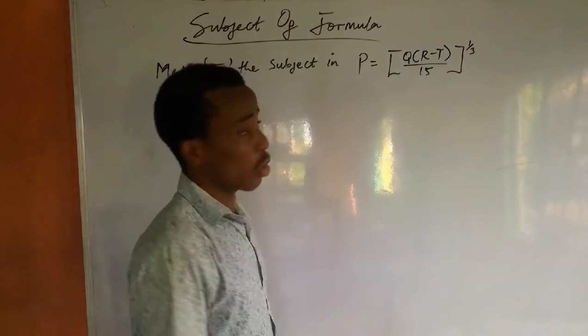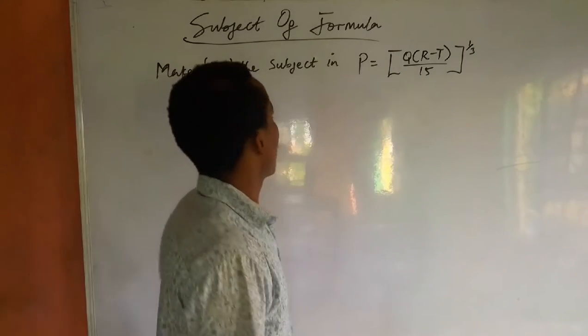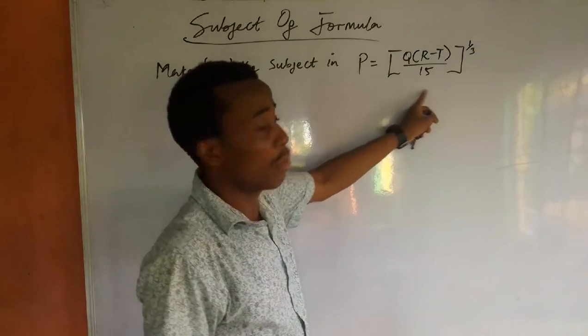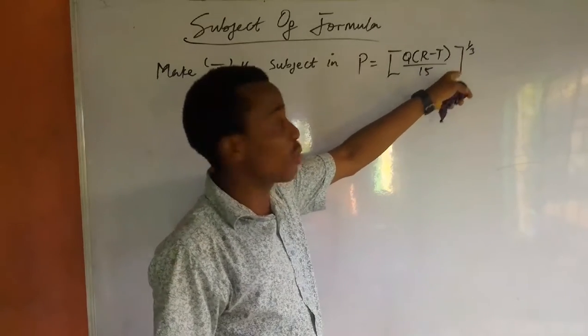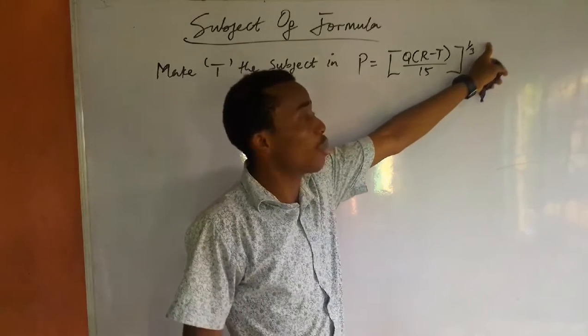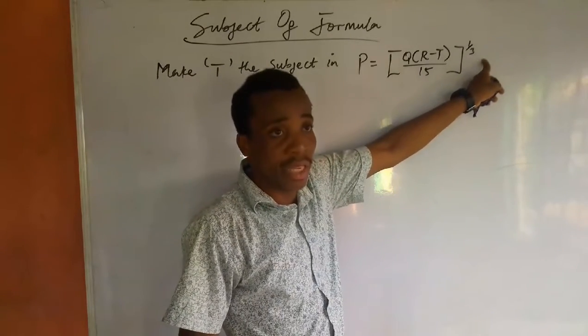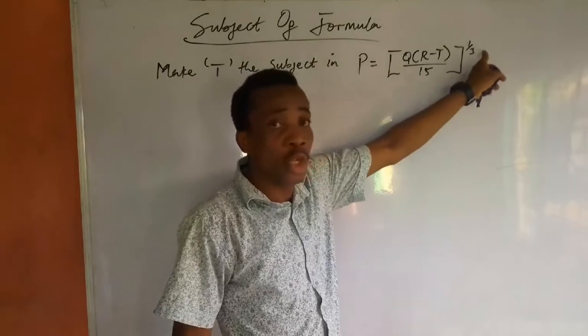In this lesson, we are going to focus on subject of formula. We are to make t the subject here in P = [Q(R-t)/15]^(1/3). And this 1 over 3 means cube root.